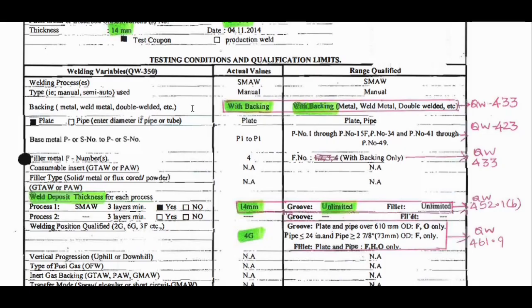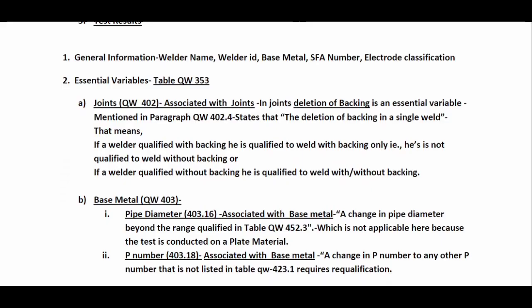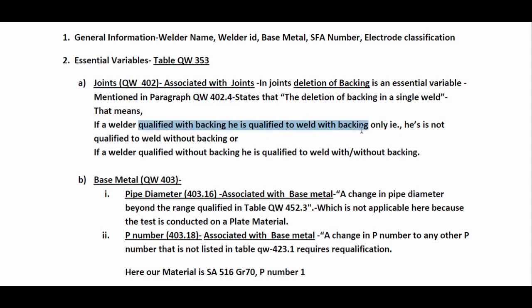The first essential variable is backing. Here the welder is qualified with backing, and the range qualified is with backing only. To obtain these details, we refer to paragraph QW402.4 of ASME Section 9. Paragraph QW402.4 states that deletion of backing in a single weld is an essential variable. That means if a welder is qualified with backing, he is qualified to weld with backing only — not without backing. However, if a welder qualifies without backing, he is qualified to weld with or without backing.